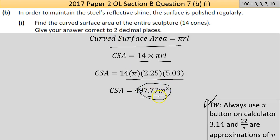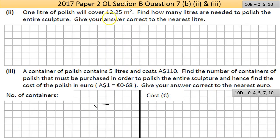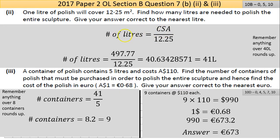The number of liters needed is the curved surface area divided by 12.25, so 497.77 ÷ 12.25 = 40.6... You can't buy 0.6 of a can, you have to round up. Anything above 40 means you need an extra can, so you need 41 liters.